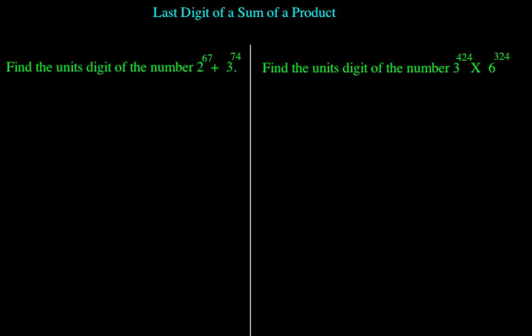Here we'll be looking at how to find the units digit of a sum or a product. First we'll look at the sum. The example is: find the units digit of 2 raised to power 67 plus 3 raised to power 74. We simply find the units digit of each number and then add them to get the units digit of the resultant number.